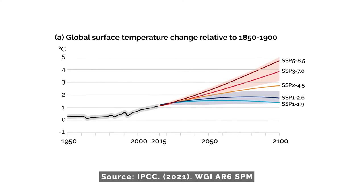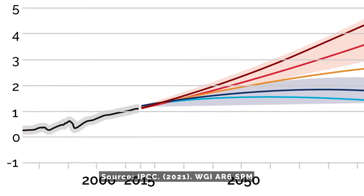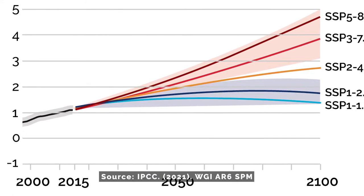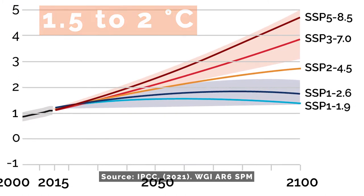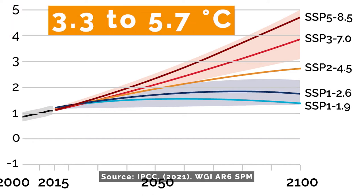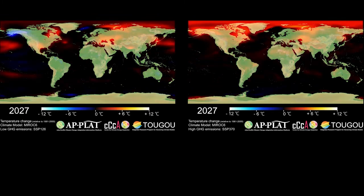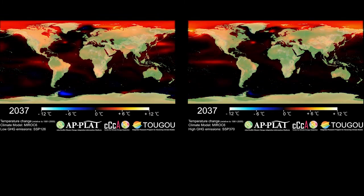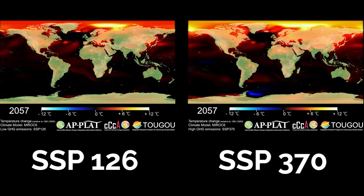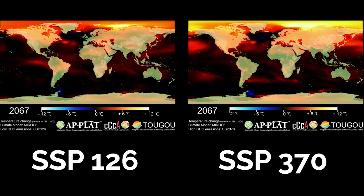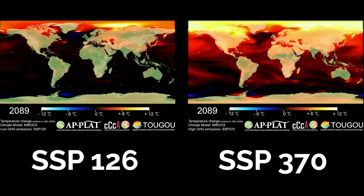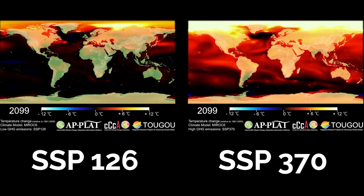The global average temperature will continue to rise until at least 2050 under all emission scenarios. Unless carbon dioxide and other greenhouse gas emissions are substantially reduced in the coming decades, global temperatures are expected to exceed between 1.5 and 2 degrees Celsius during the 21st century. Under the maximum emissions scenario, SSP 5-8.5, temperatures are projected to rise between 3.3 and 5.7 degrees Celsius by the end of the century. The map on the left shows how the future global average temperature will change compared to the average between 1981 and 2000 under the SSP 1-2.6 scenario, and the map on the right shows the same under the SSP 3-7.0 scenario. The SSP 3-7.0 scenario with higher emissions is redder as it approaches 2100, meaning temperatures have increased more.